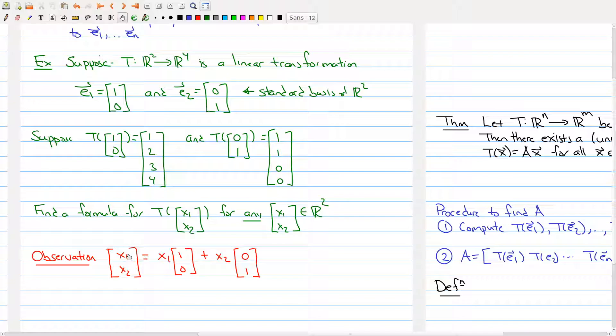In fact, what you have is x1, x2 is equal to x1 times the first standard basis element plus x2 times the second basis element. So notice that we've written this as a scalar multiple of standard basis elements and they're adding their particular sum.